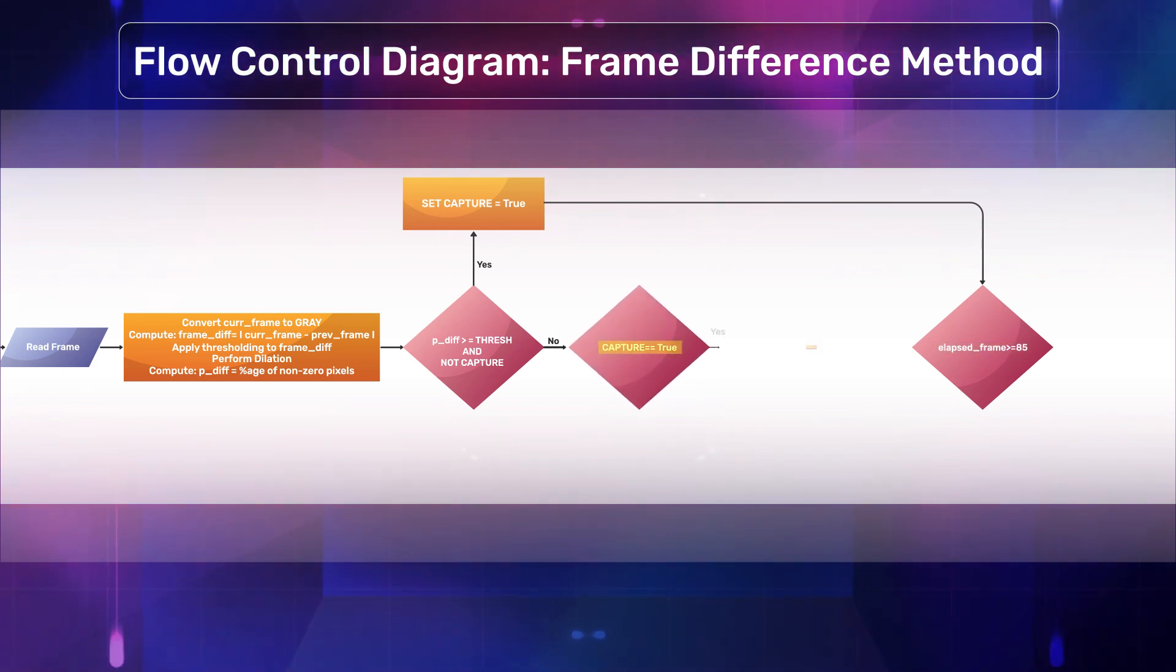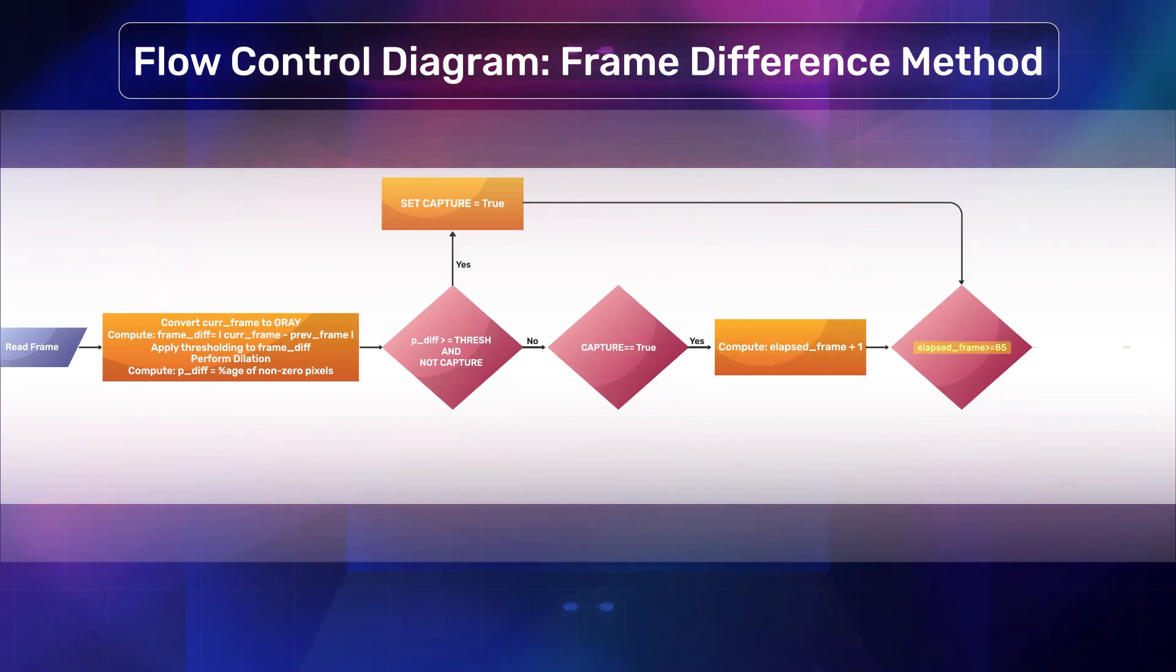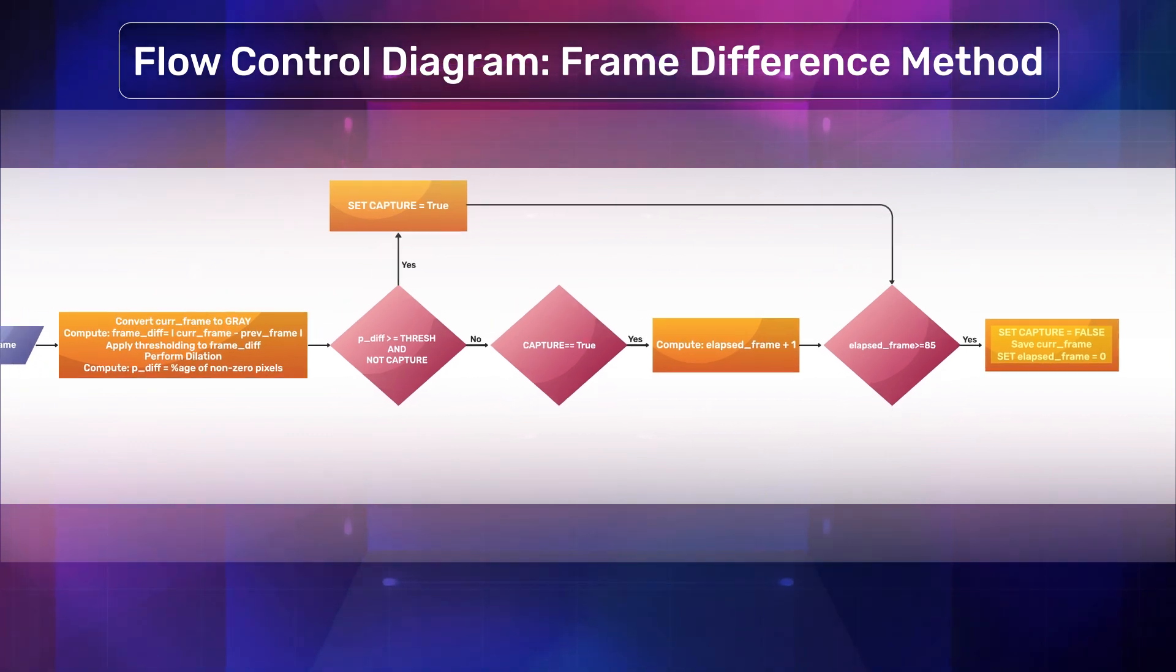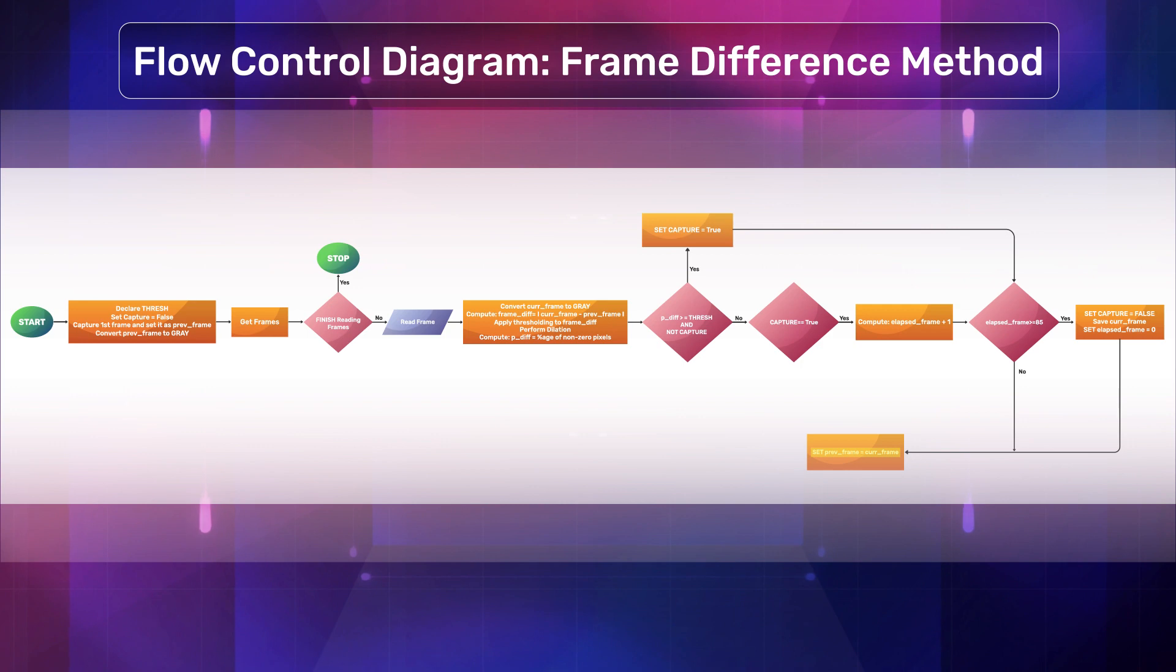While the captured flag is true, skip the frame. We found that 85 gives us a good result. Save the video frame after skipping 85 frames. Set the capture flag to false and set the previous frame variable to the current video frame and move on to the next frame. This will continue to loop until we reach our stop condition, which is the end of the video.